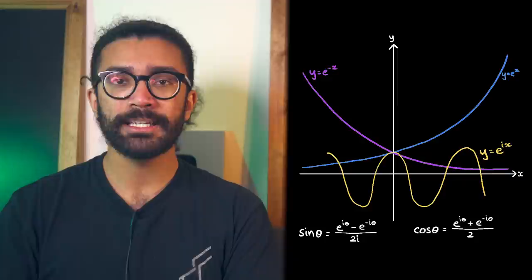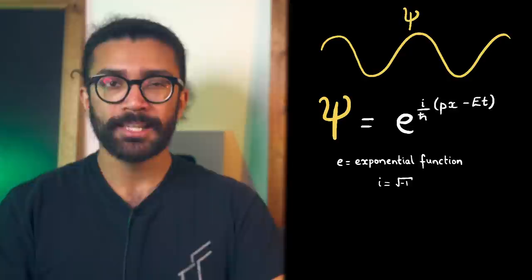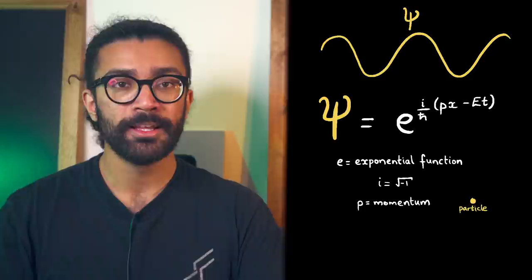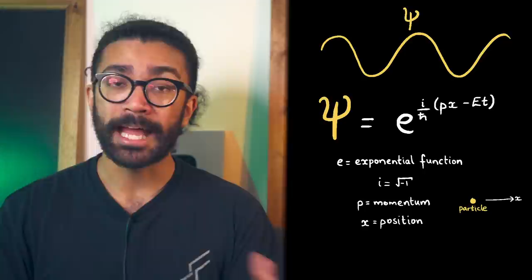So basically, exponential function by itself, yes it doesn't look like a wave, but e to the power of i something does look like a wave. Now in this expression, p is talking about the momentum of the particle, the particle for which this is the wave function. And this momentum is of course in the x direction, because we're only looking at the particle's motion in one direction, just to keep things simple. x is of course the position along the x direction, e is the particle's energy, and t is time.